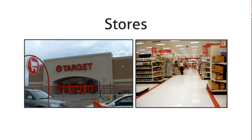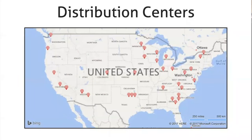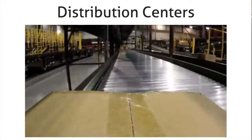Here are a couple of pictures of Target stores. Ultimately, everything at Target boils down to getting the right things to the store and selling them to the right people. A big part of this is the network of distribution centers that control how products move through the Target network. We have 37 dotted around the United States, as you can see on this map. Each distribution center is actually quite a large operation, with both a substantial amount of automation and a substantial amount of manual work.